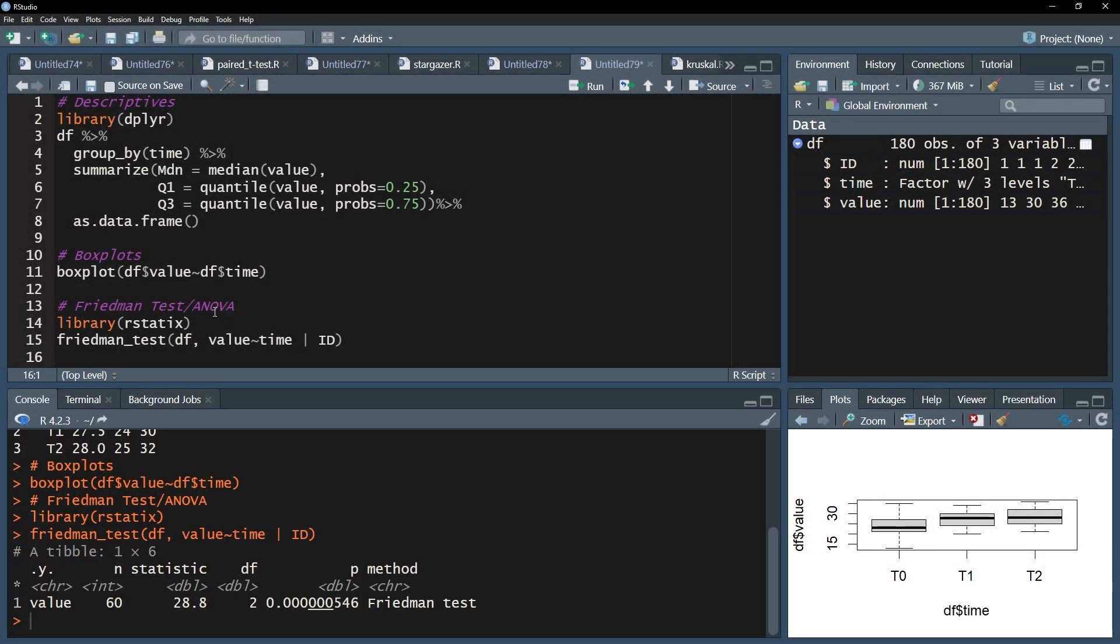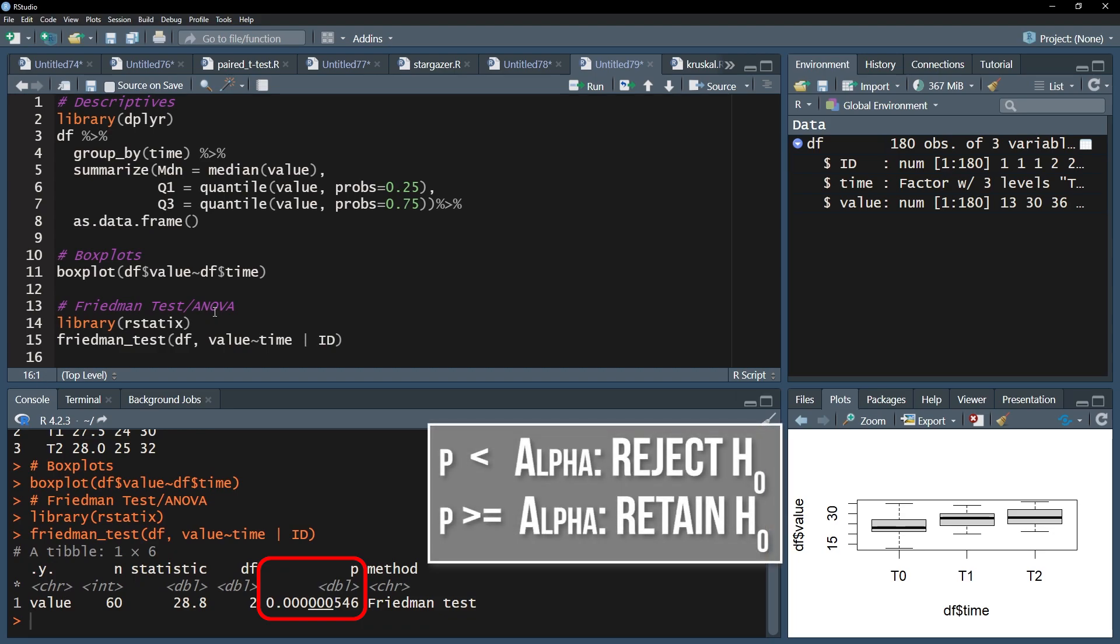After running this line, I will get my test results for the Friedman test. The interpretation is straightforward. If the p-value is below the predefined threshold, for example 0.05, the null hypothesis can be rejected.